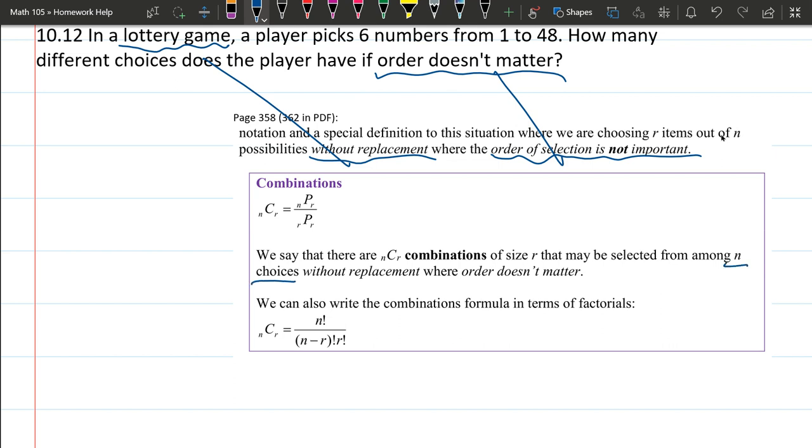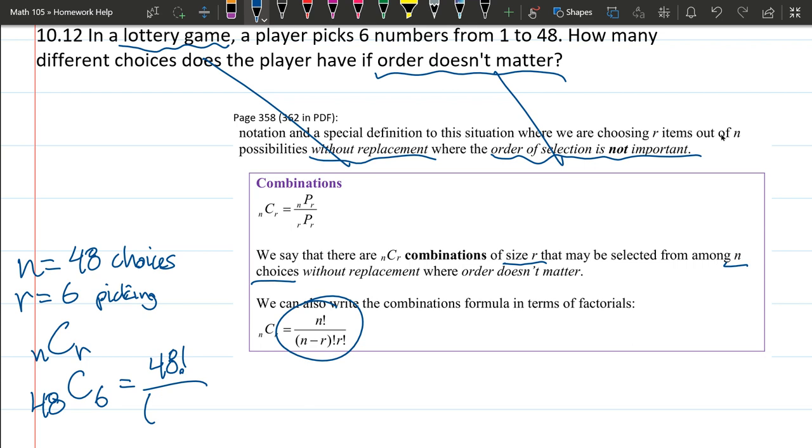We have N choices - 1 to 48, so we have 48 choices, which is the letter N. R is how many we're picking, and we're picking six numbers. The way we write this is N C R, and for us that'll be 48 choose 6. We have 48 factorial divided by N minus R, which is 48 minus 6 factorial, times R, which is 6 factorial.